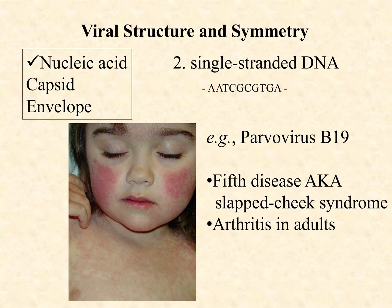An example would be parvovirus B19. Many of you have heard of parvo as a dog infection, and it is in the same family of viruses. B19 specifically infects us — as far as I know, it does not infect dogs, and the parvovirus that infects dogs doesn't infect us. Parvo B19 causes something we call fifth disease. The reason it's called fifth disease is that pediatricians last century would carry a list of the most common illnesses they were seeing in children, and fifth on that list was this condition.